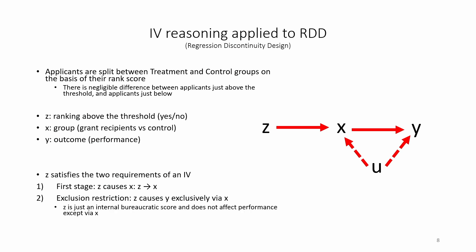This makes sense because Z is just an internal bureaucratic score, a ranking score, and does not affect performance except via X. So it makes sense to think that any causal effect of Z on Y operates only through X. So we consider that the first stage and exclusion restriction conditions are plausible.